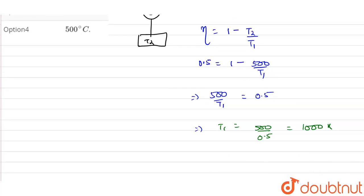Or what we can say that T1 will be equals to 500 upon 0.5, that will be equals to 1000 Kelvin. Now if T1 is 1000 Kelvin,